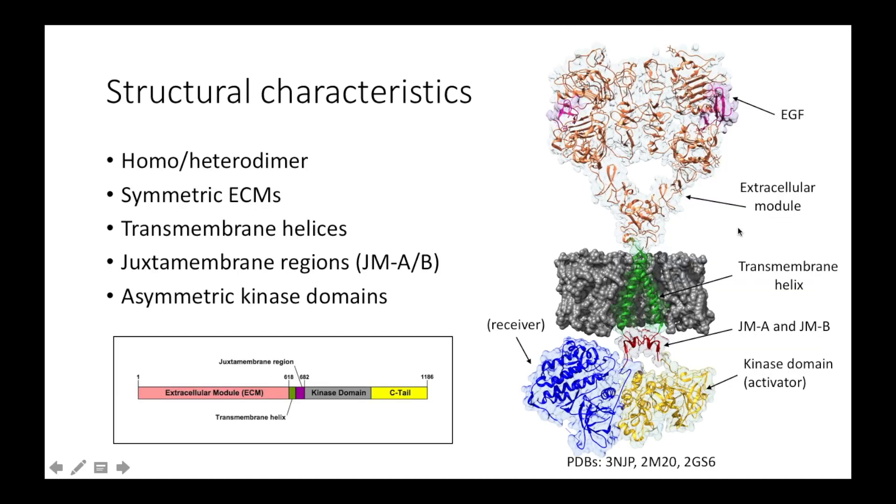Once again, we can see the overall structure of an active EGFR dimer. Note that this structure is a composite of three separate solved structures identified by the PDB IDs listed below. The single transmembrane helix makes crystallographic analysis of the whole protein impossible, and so the structures of the extracellular module, transmembrane helix, and kinase domains have all been solved separately.